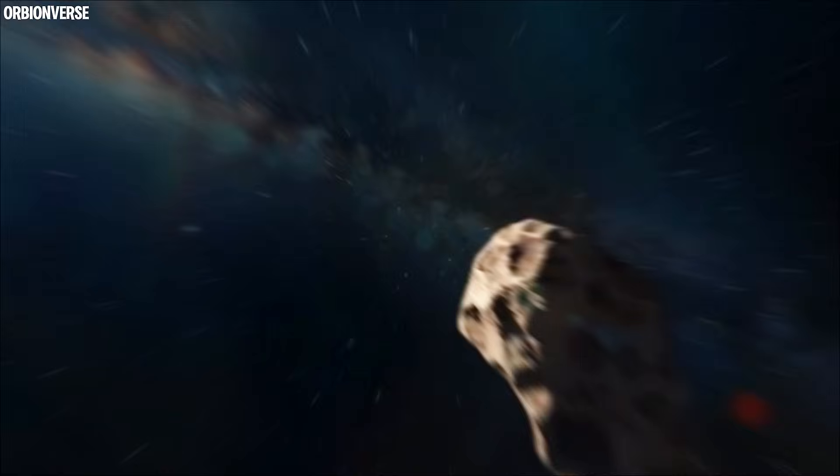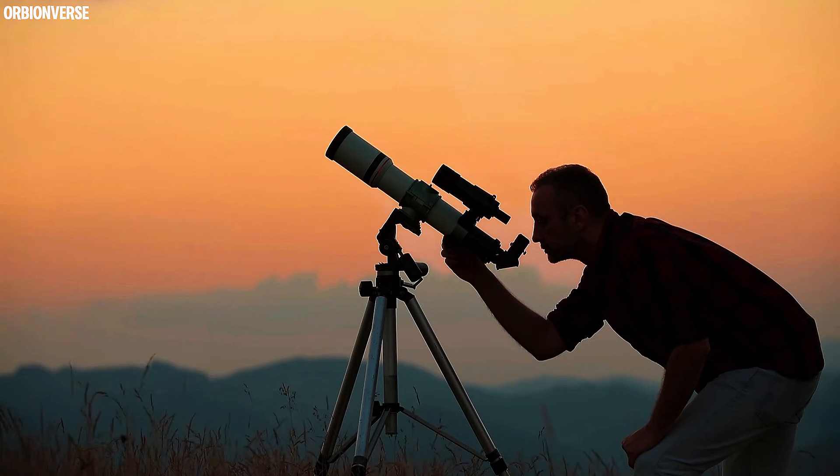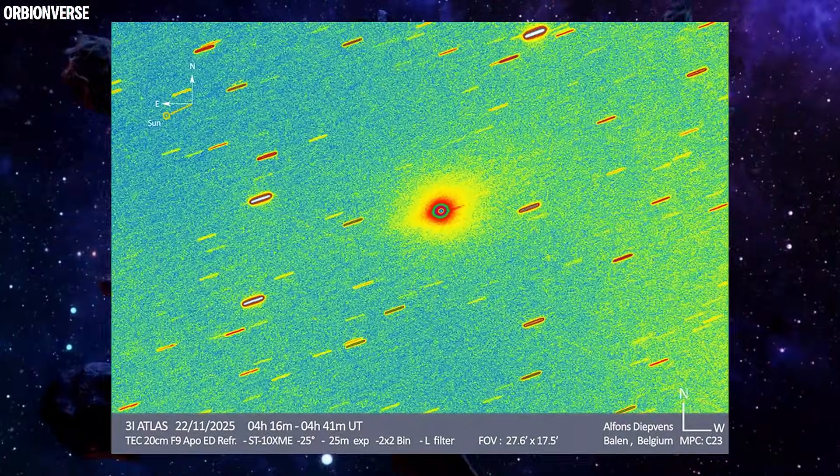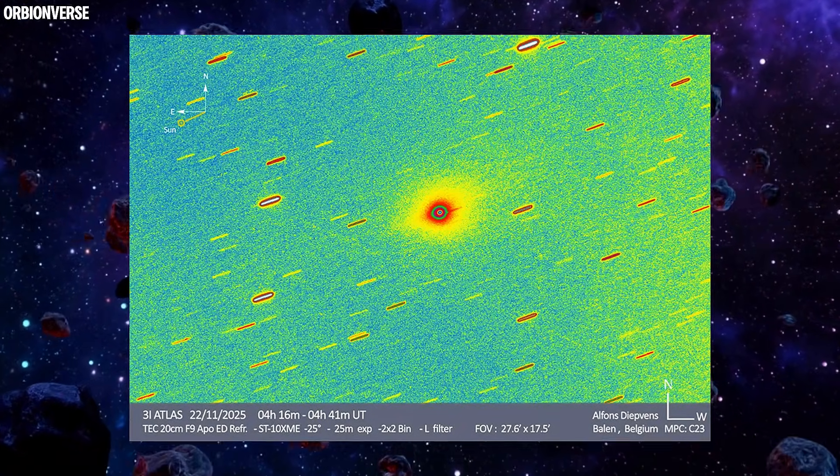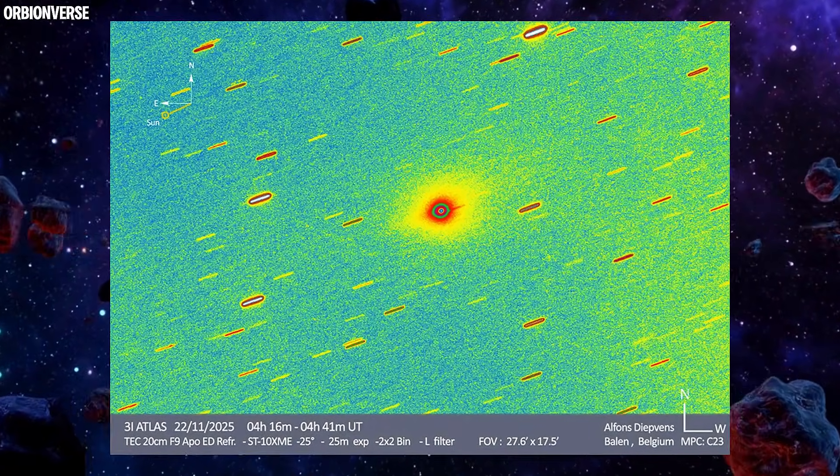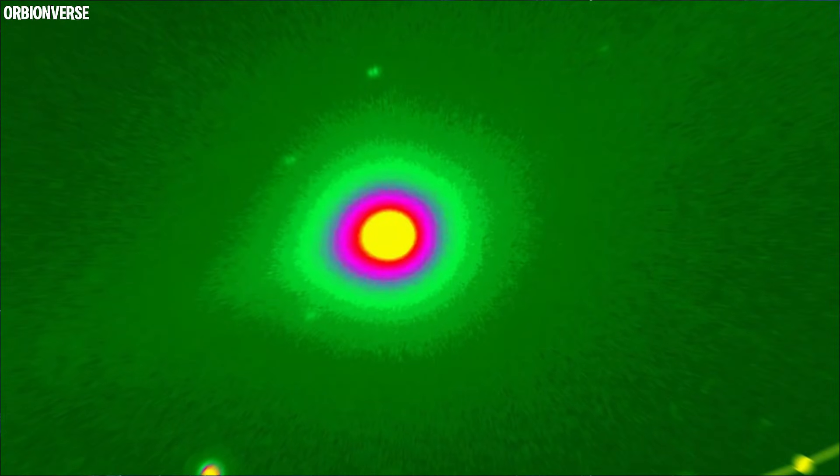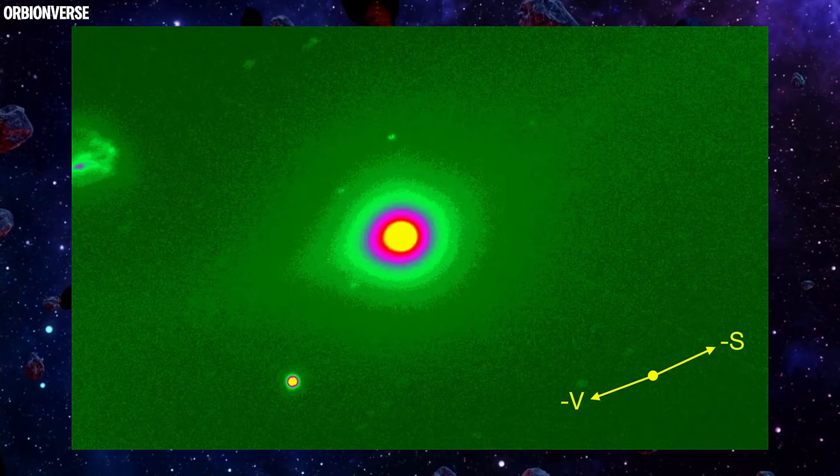For the past week, astronomers and sky watchers have been recording something unusual. Each night, the comet returns to the lens looking larger, brighter, and more intense. Even people who photographed it just 48 hours apart are stunned at how fast the glow is expanding.